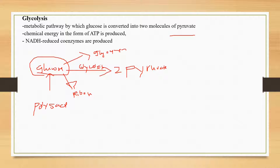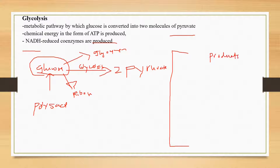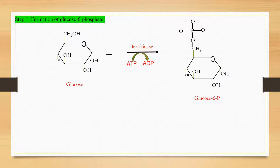In this process, chemical energy in the form of ATP is produced. Nicotinamide adenine dinucleotide in the reduced form (NADH) is also produced. The products we would expect are: two molecules of pyruvate, molecules of reduced coenzyme NADH, and ATP.